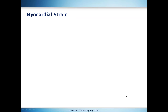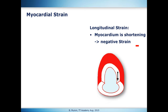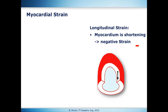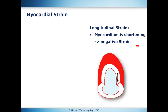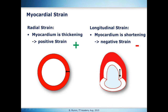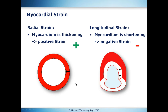How does this apply to the heart and the myocardium? On the right side, you see a symbolized heartbeat of the left ventricle showing the longitudinal strain. The myocardium is shortening throughout the cardiac cycle, which is why, like in the muscle sample, we have a negative strain. This is different if we look at radial strain — here the myocardium is thickening, so we talk about a positive strain.